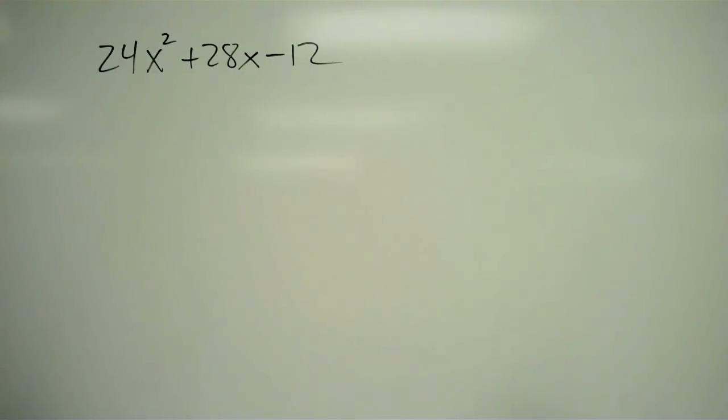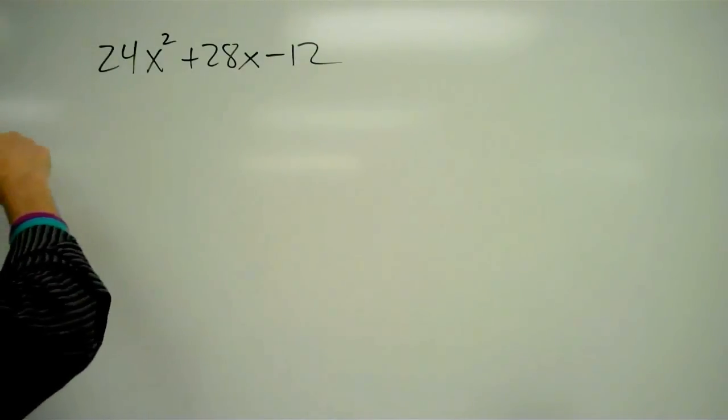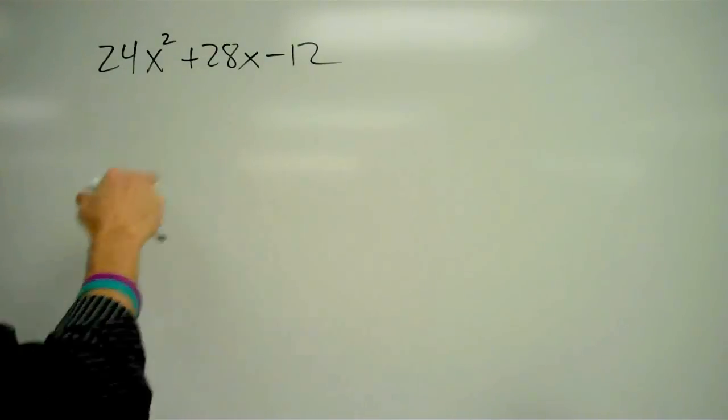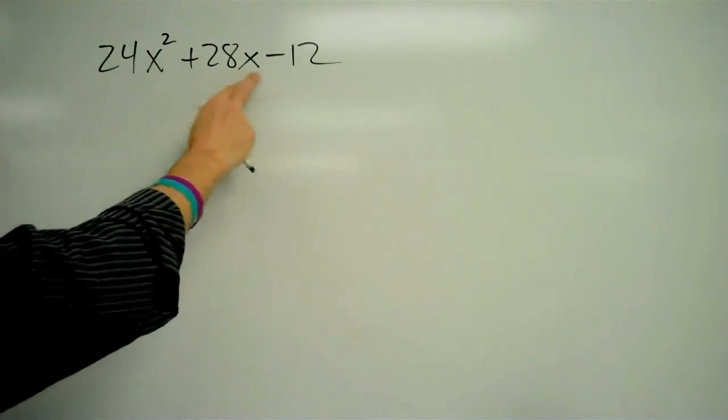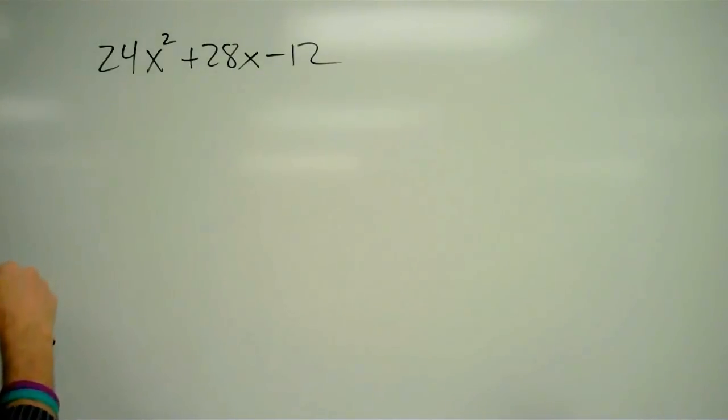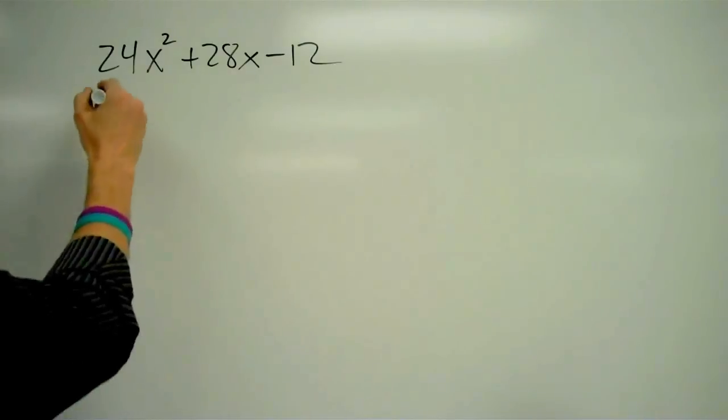Now, I know a lot of people are going to look at this and say, okay, let me find factors of 24, let me find factors of 12, and before you do that, notice all three of these terms are divisible by 2. As a matter of fact, all three of these terms are divisible by 4.